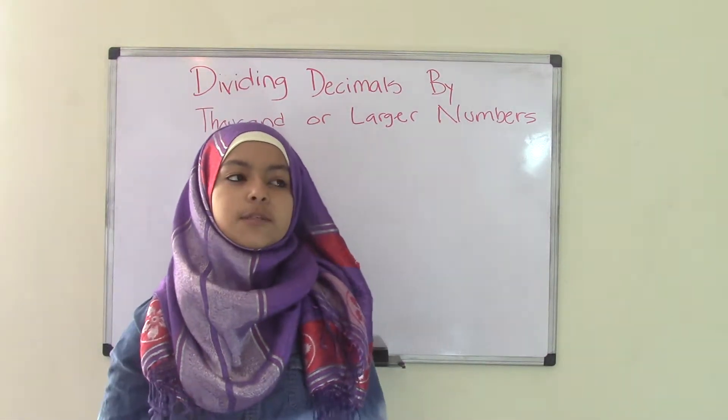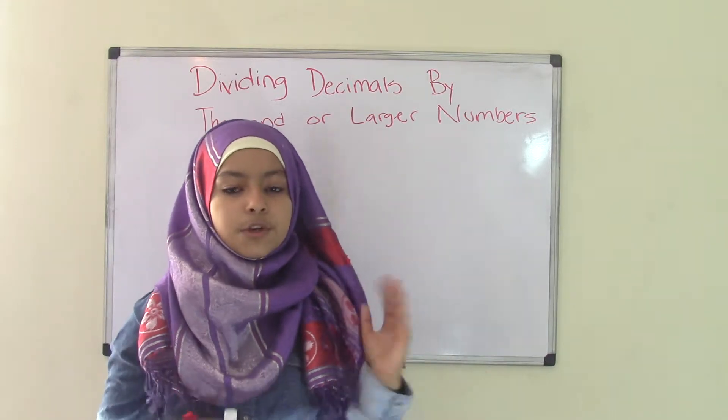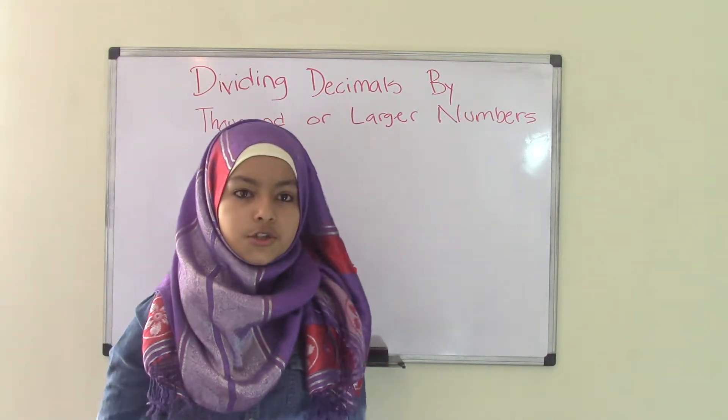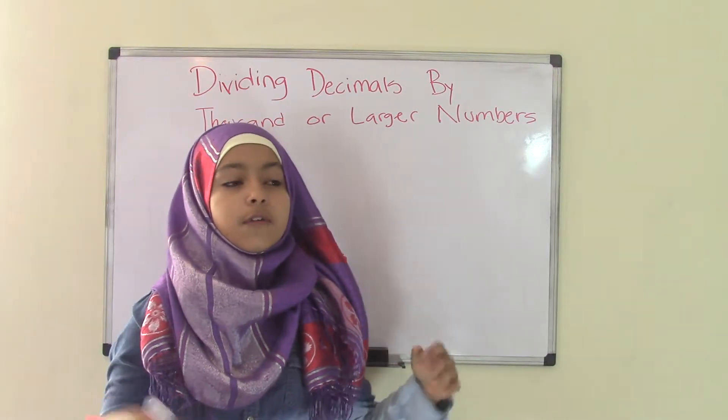In our previous two topics we talked about dividing decimals by tens and hundreds. This is pretty much the same thing except we're using larger numbers like thousand, ten thousand, one hundred thousand, or even up to a million.